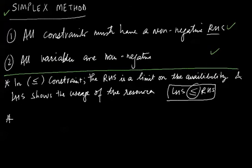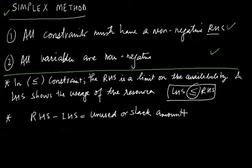The second point you should always remember: the difference between the RHS and the LHS, that is RHS minus LHS, is termed as the unused or slack amount of the resource. So this much resource is not being used. That is the difference between the maximum availability and the usage. So this is also something very important.